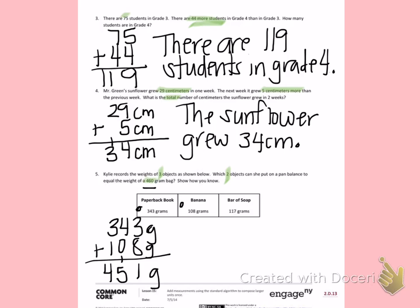So this time, I'm going to try the paperback book again and the bar of soap. I'm going to stick with the paperback book because it is the heaviest. So I will add 343 grams plus 117 grams. 3 plus 7 is 10.